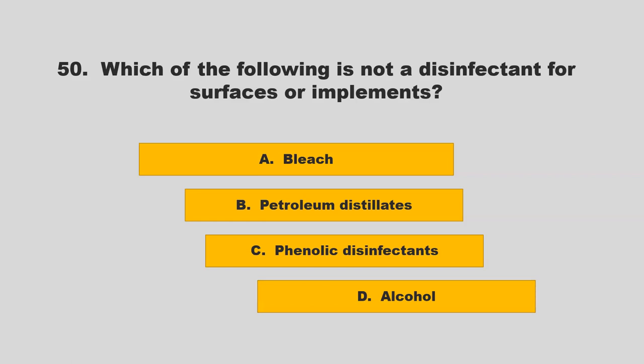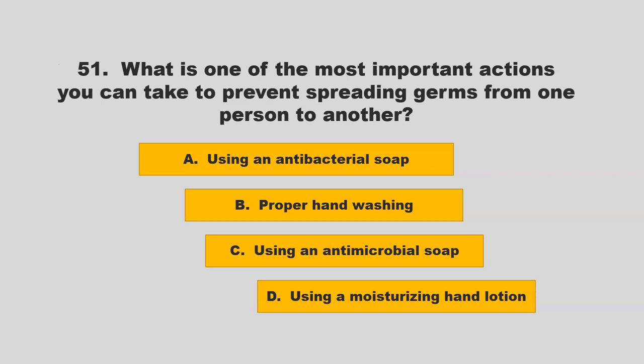Which of the following is not a disinfectant for surfaces or implements? Options: bleach, petroleum distillates, phenolic disinfectants, or alcohol. The correct answer is D: alcohol.